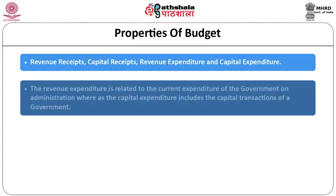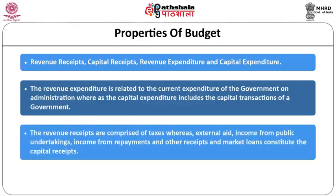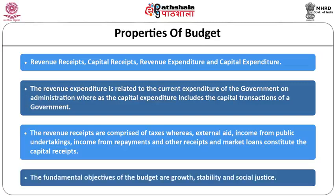Properties of budget: The revenue expenditure is related to current expenditure of the government in administration, whereas capital expenditure includes the capital transactions of government. Revenue receipts are comprised of taxes, whereas external income from public undertakings, income from repayments and other receipts, and market loans constitute capital receipts. The fundamental objectives of budget are growth, stability, and social justice.